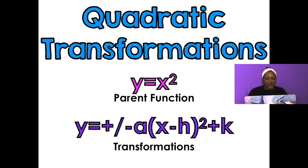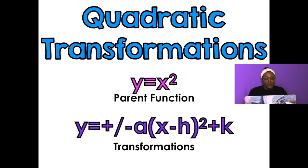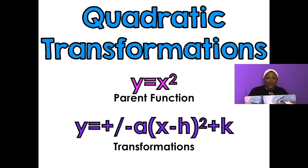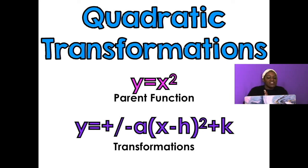Our parent function for a quadratic is y equals x squared, or f of x equals x squared. The long version of the equation is y equals plus or minus a, parentheses x minus h, quantity squared, plus k — we call that the vertex form of a quadratic. The vertex form applies to all the other functions as well, so today we're going to discover what those different values do to the graph.